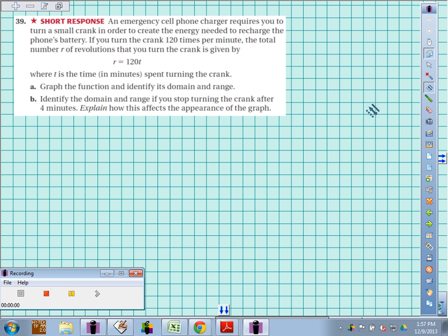Problem 39: An emergency cell phone charger requires you to turn a small crank in order to create the energy needed to recharge the phone's battery. If you turn the crank 120 times per minute, the total number of revolutions that you turn the crank is given by revolutions equals 120 times t, where t is the time in minutes you spent turning the crank.